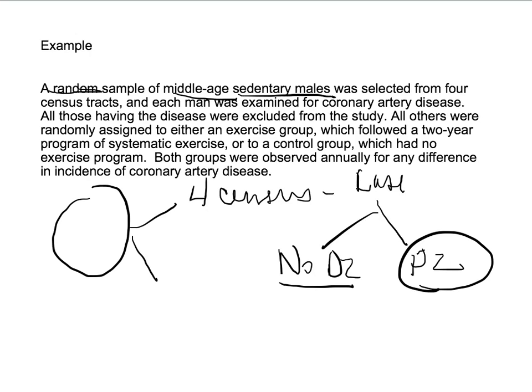Now we have the no-disease group, and they are randomized to two different arms: a treatment arm and a control arm. Having a control arm does not make it a case-control study — it is the control arm of a randomized trial. In this case, they're randomized at two different levels. This is a randomized controlled trial, and drawing out what happens helps you figure out whether it's retrospective or prospective, what the design is, and sometimes there will be a mixed design.